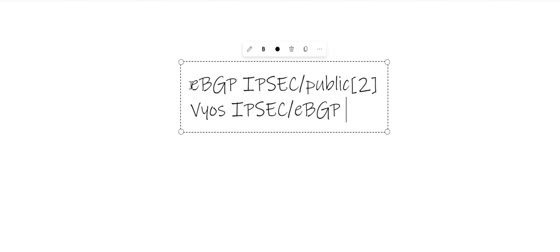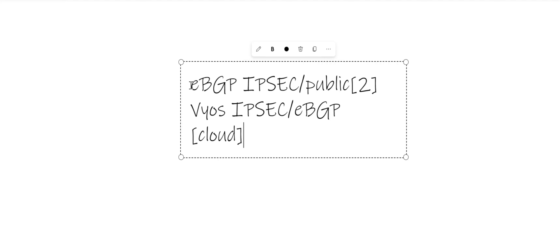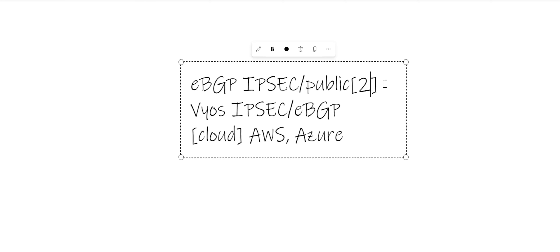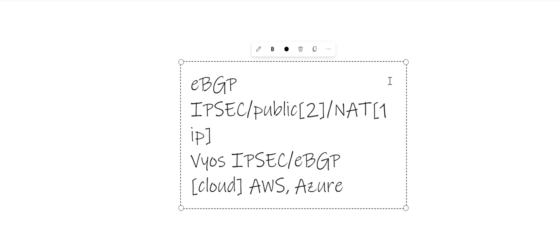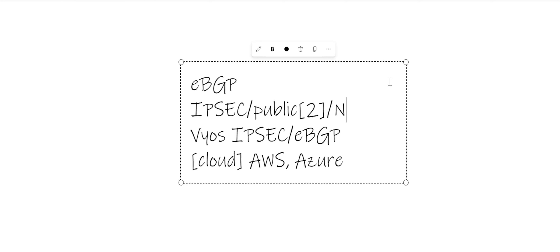This will help you create network connections to cloud. Vios is available in AWS as well as Azure, and I'm sure it's also available in GCP. If you get VBGP IPSec working with a public IP, the other scenario would be behind NAT with one IP, which I'll cover in the second video.